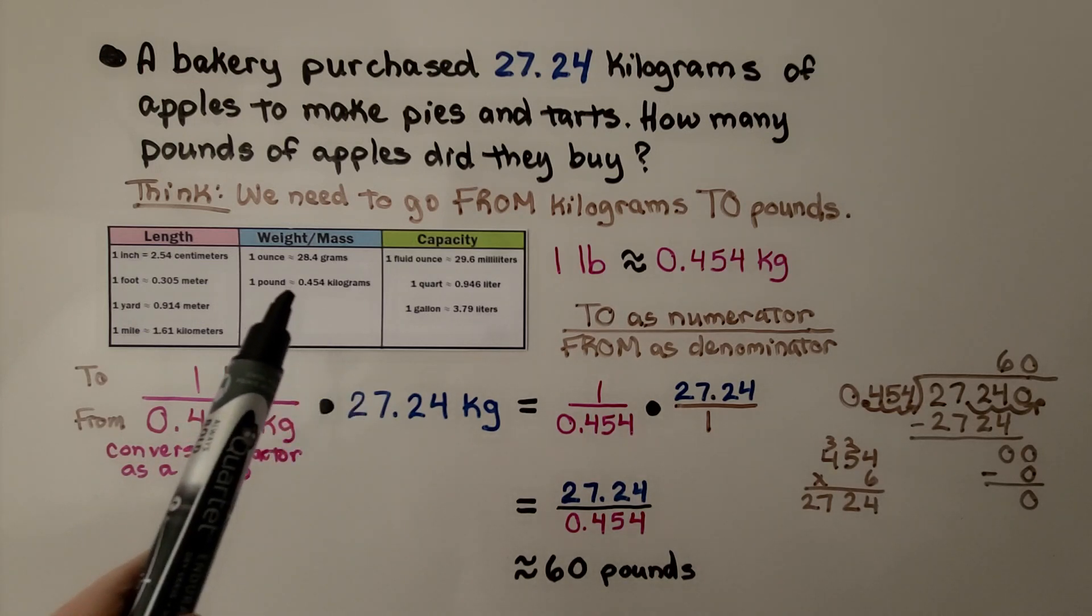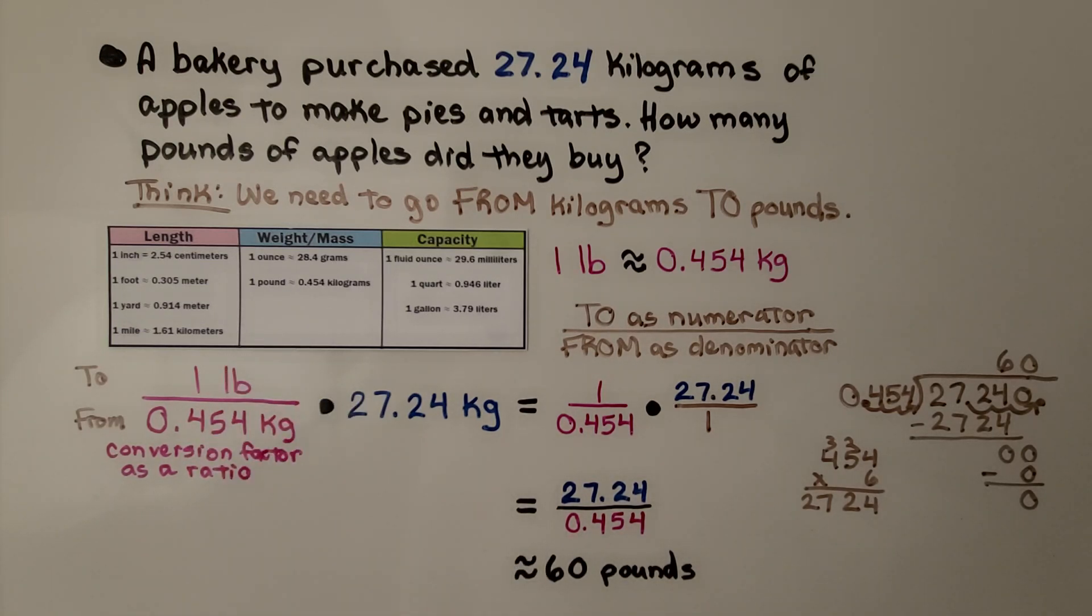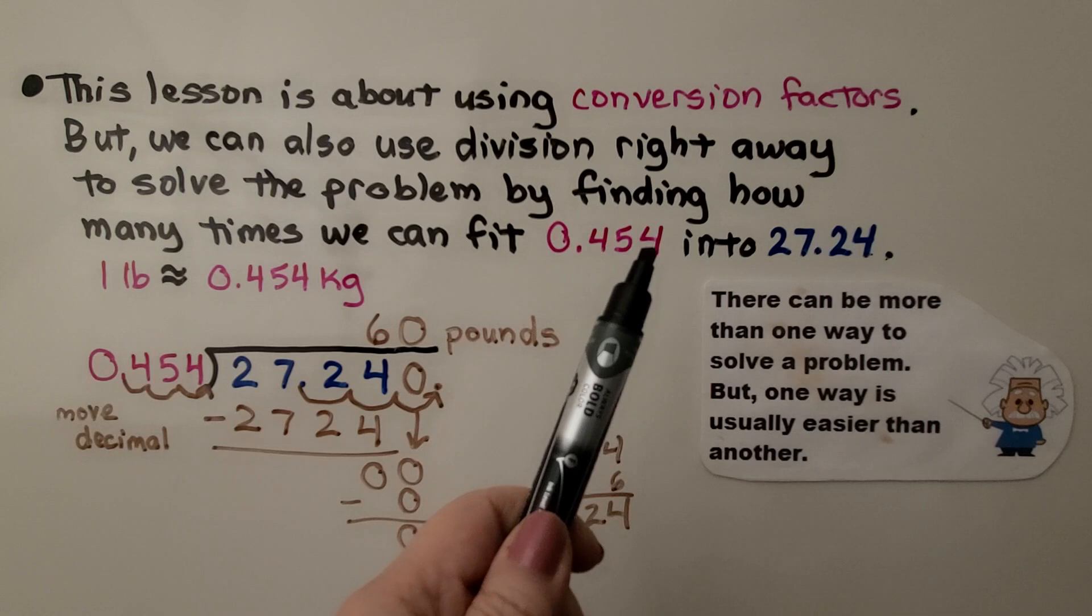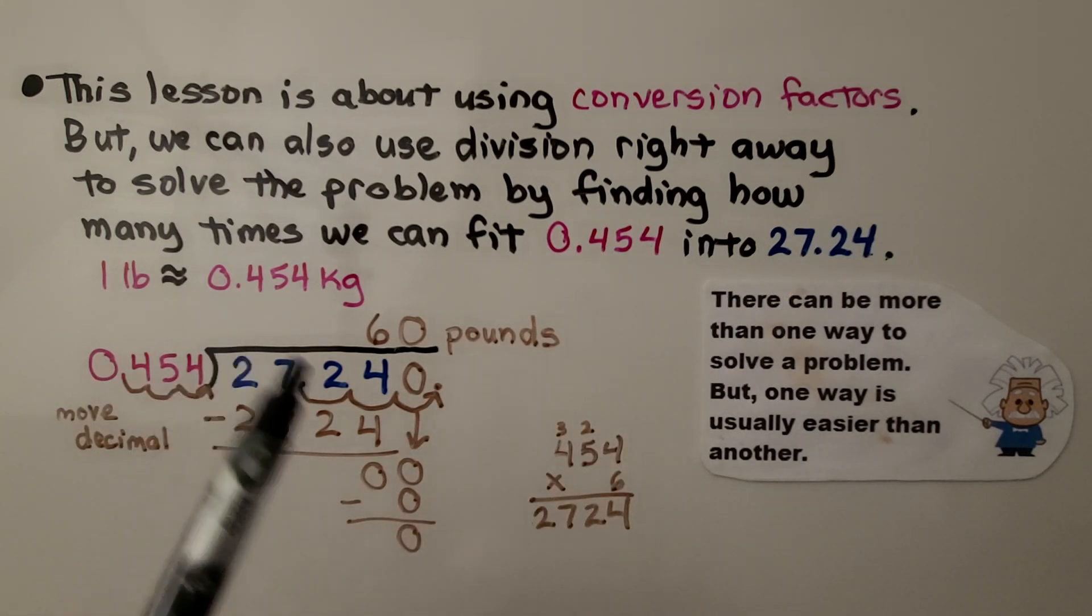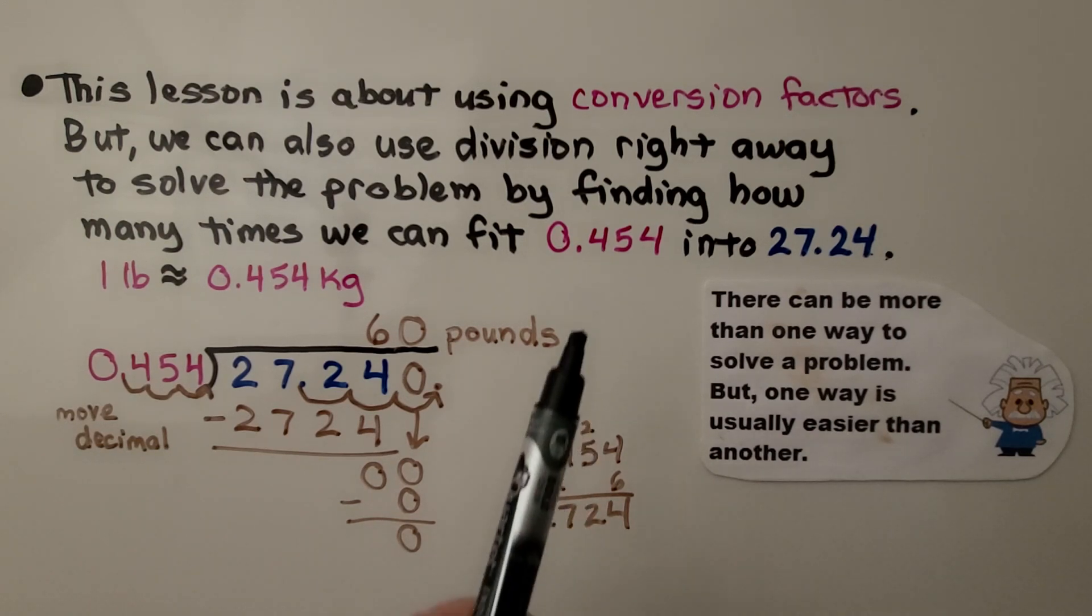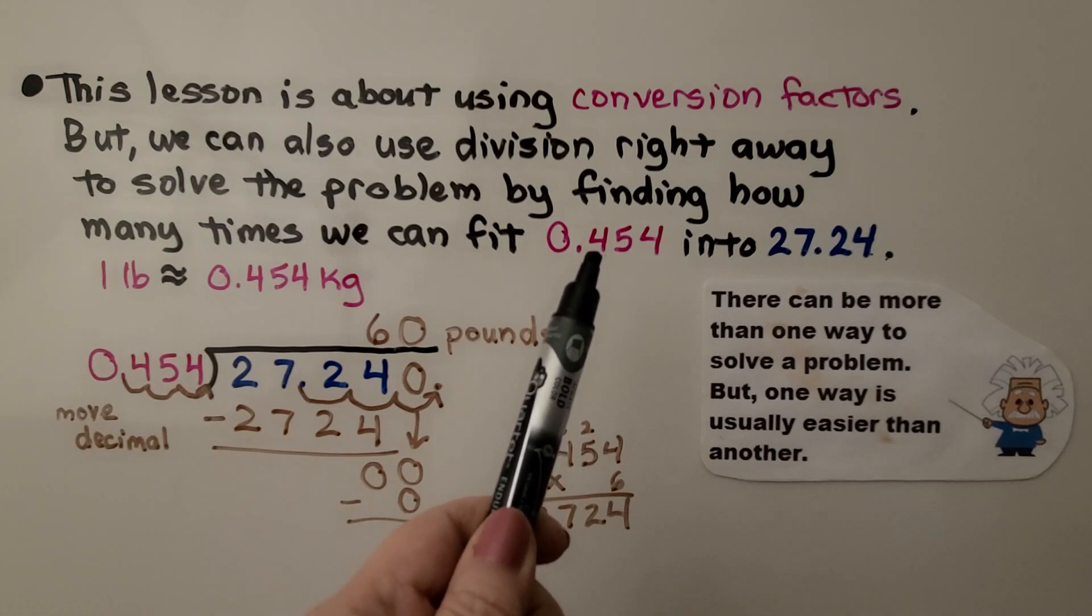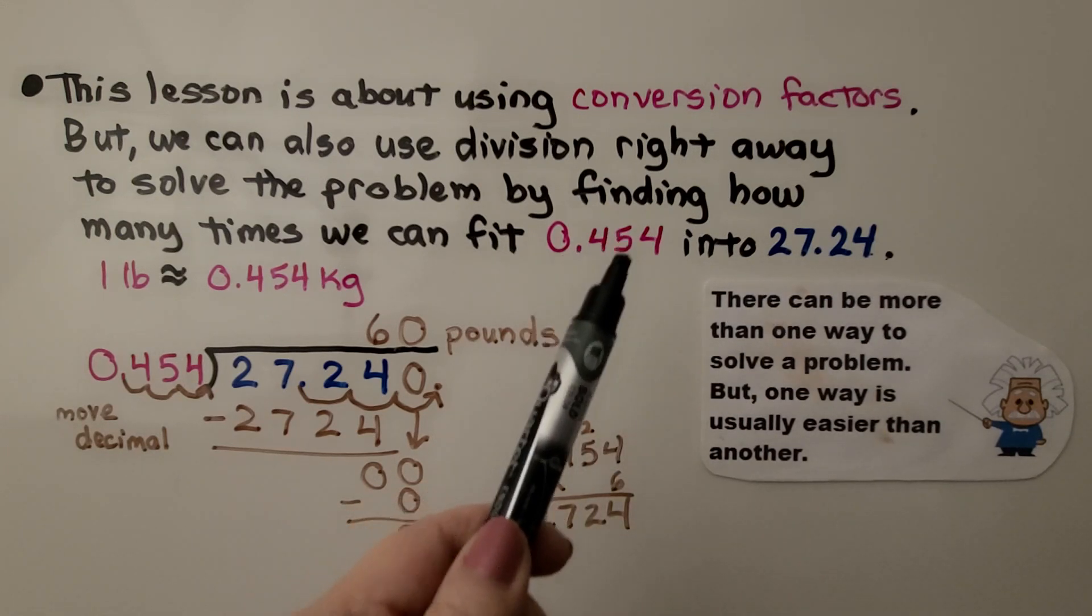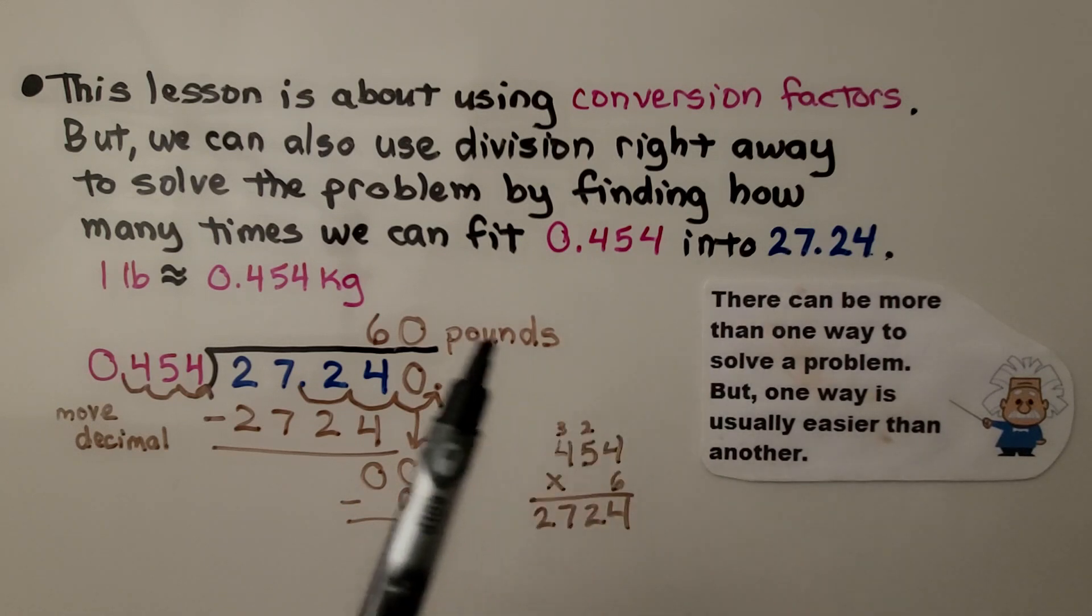Approximately. Because this is an approximation, we have approximately 60 pounds. Now, this lesson is about using conversion factors, which is why we solved it the way we did. But we can also use division right away to solve the problem by finding how many times 0.454 fits into 27.24. We find it fits in 60 times, so there's 60 pounds of apples. If this is equal to one pound, and we're trying to figure out how many pounds are in this amount, we can just find how many times this amount fits into that one, and that'll give us the pounds.